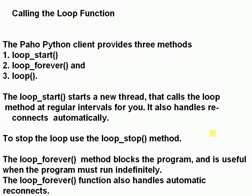The loop_forever method blocks a program, and it's used for when the program is running indefinitely, so you usually find it right at the end of your script — you go through the code and you just loop forever. The loop_forever function also handles automatic reconnects.